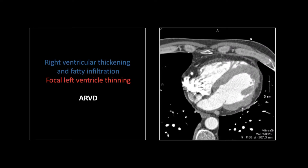Let's go through some myocardial and pericardial abnormalities. This is a nice one — you can see very nicely on CT here fatty infiltration and thickening of that free right ventricular wall. Just a classic finding for arrhythmogenic right ventricular dysplasia. What I find very interesting about this study is the left ventricle, which is clearly dysplastic as well, with that focal irregular thinning of the myocardium.